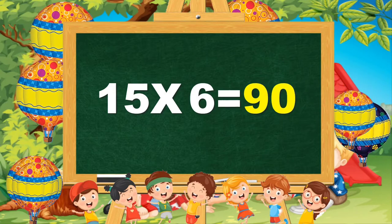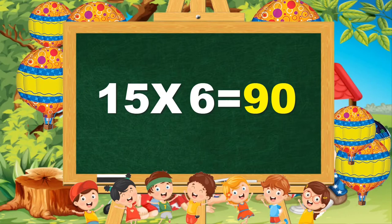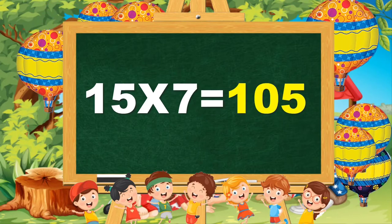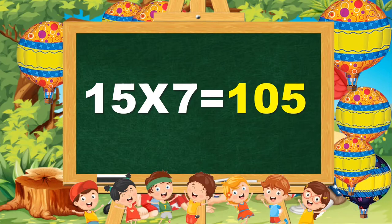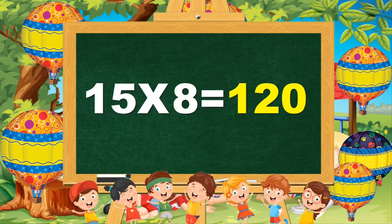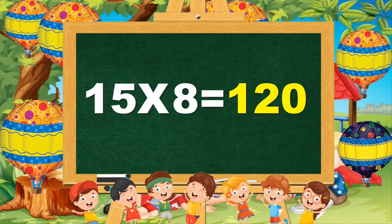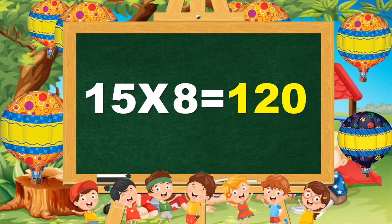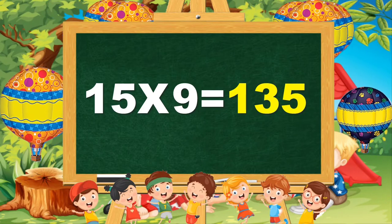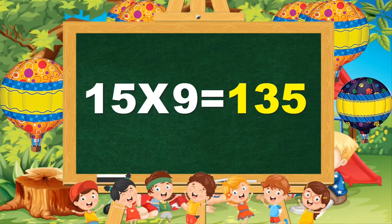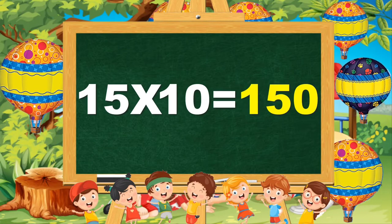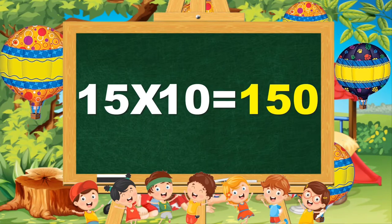15 sixes are 90. 15 sevens are 105. 15 eights are 120. 15 nines are 135. 15 tens are 150.